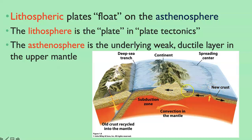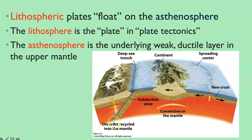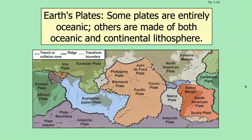The lithospheric plates float essentially on the asthenosphere, as shown in this diagram. We have the lithosphere represented here — light color for continental crust, gray for ocean crust, and speckled brown for the uppermost mantle. That combination is the plate. The lithosphere is the plate in plate tectonics, and the asthenosphere is the underlying weak, ductile layer in the upper mantle.